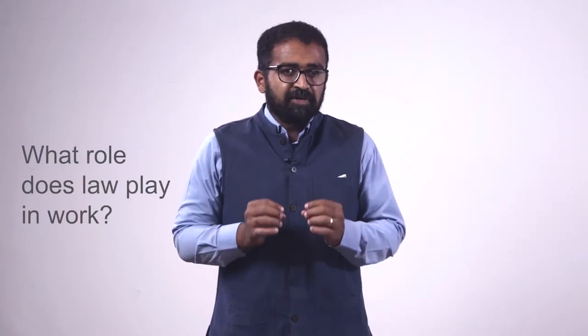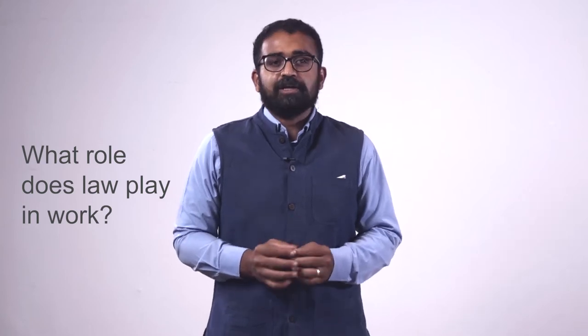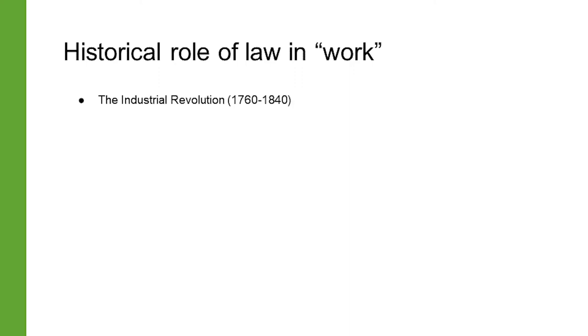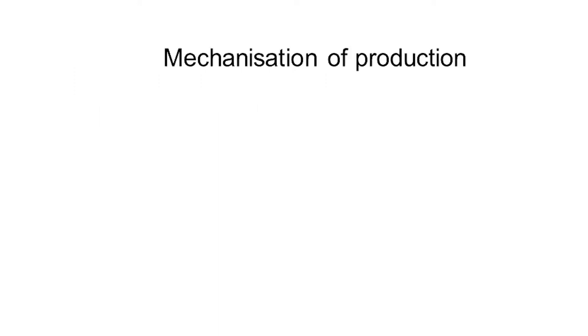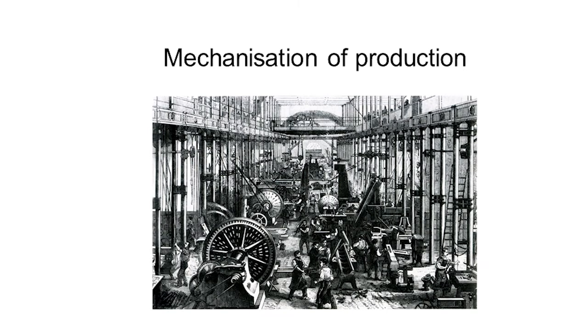To start this course, we must get a good understanding of the role that law plays in decent work. One of the ways we can do this is through the lens of history. Let us take a look at some of the events and shifts that happened at the turn of the 19th century. The industrial revolution, through the introduction of machines, transformed the processes of production.